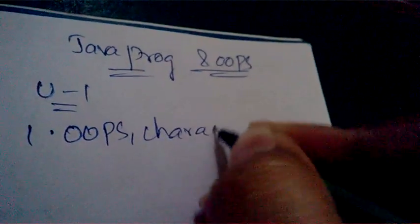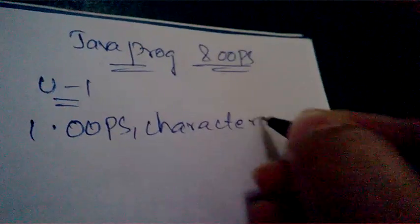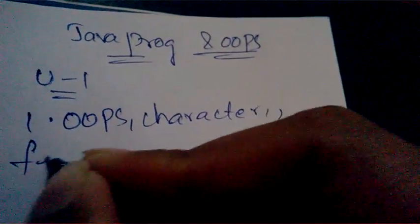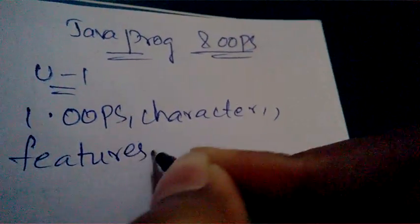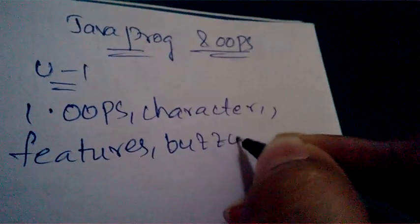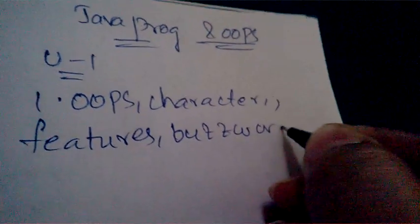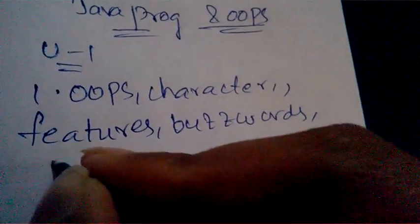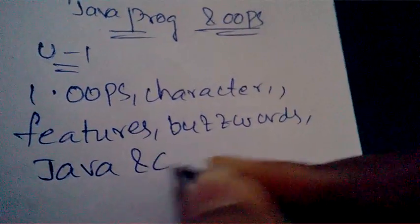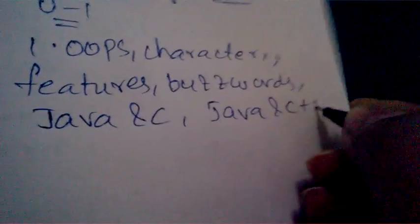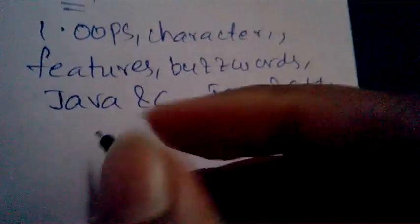Coming to Unit One, important questions are: what are the characteristics of OOPs, what are the features of OOPs, what are the buzzwords of OOPs, and the difference between Java and C, or Java and C++.